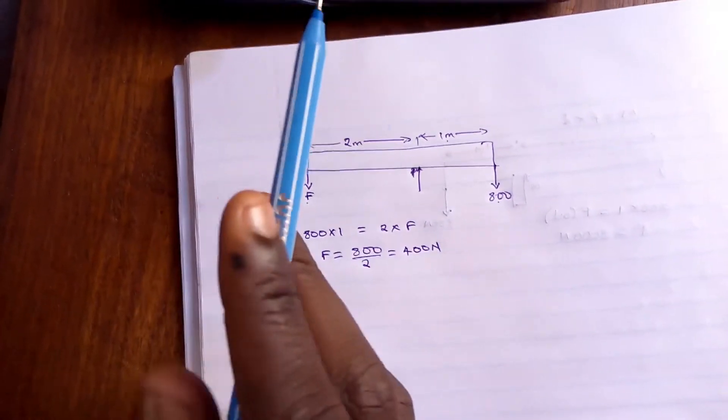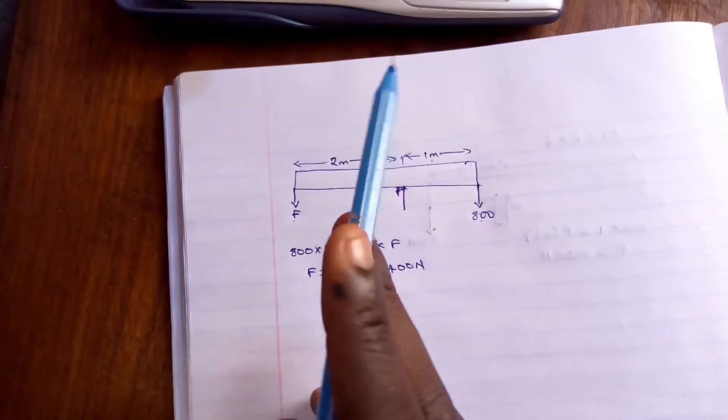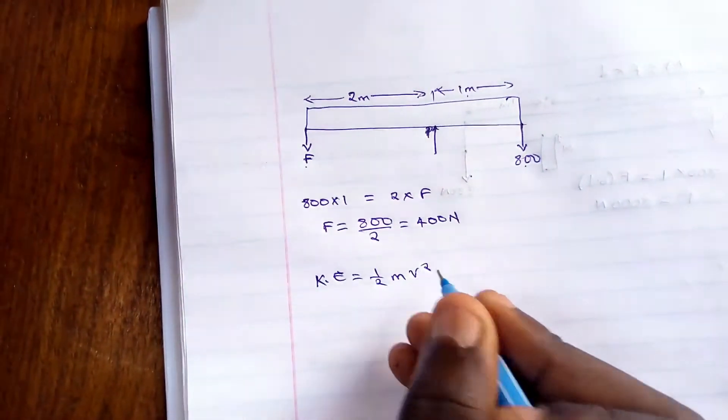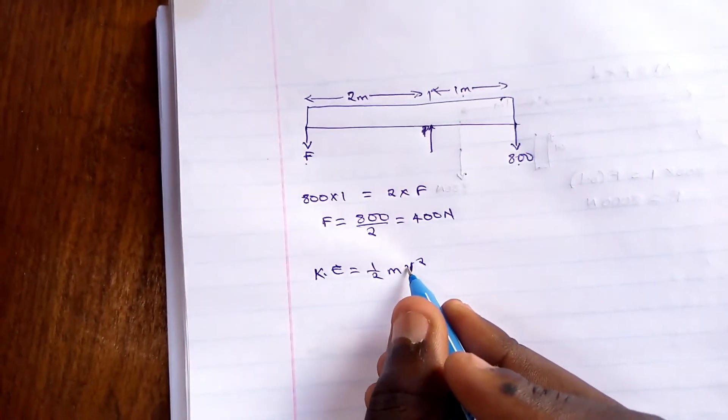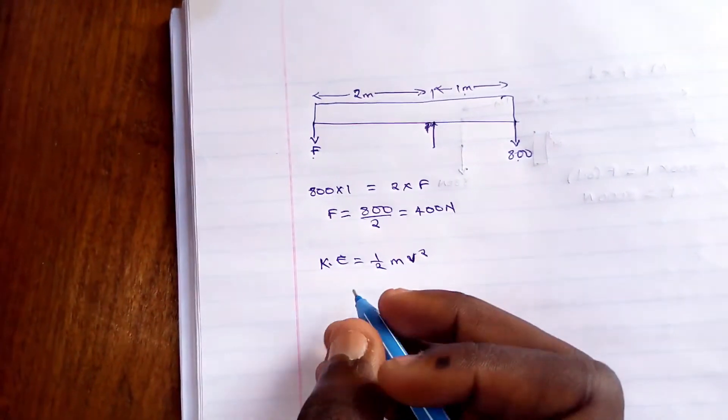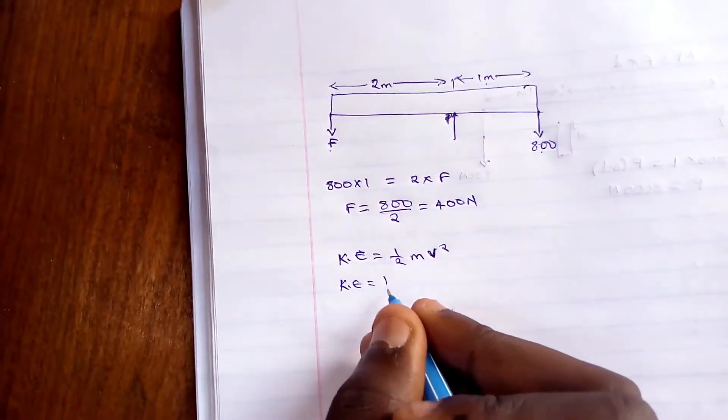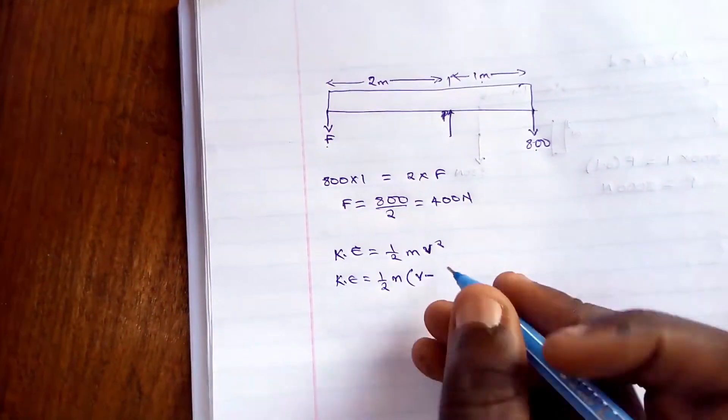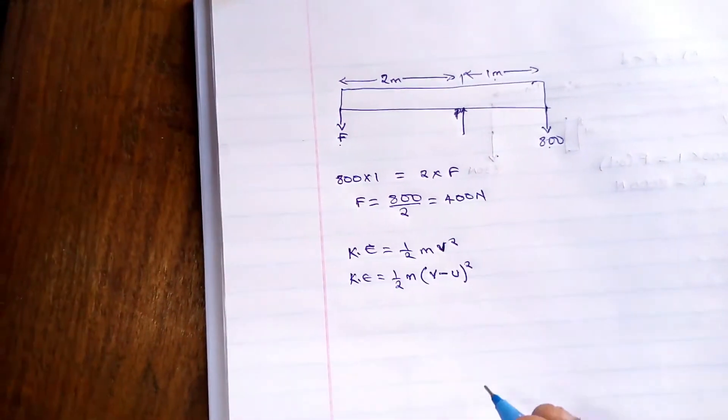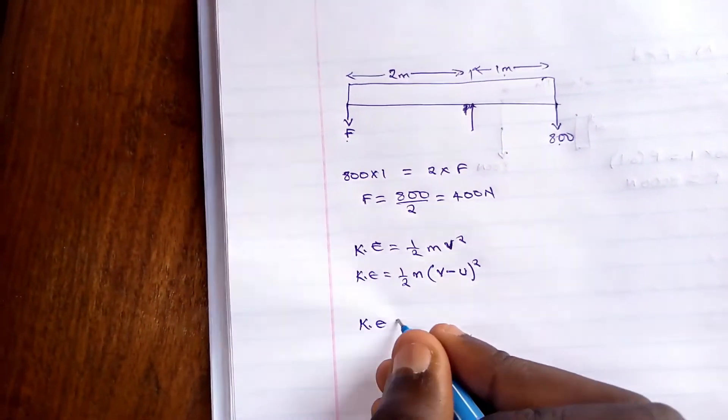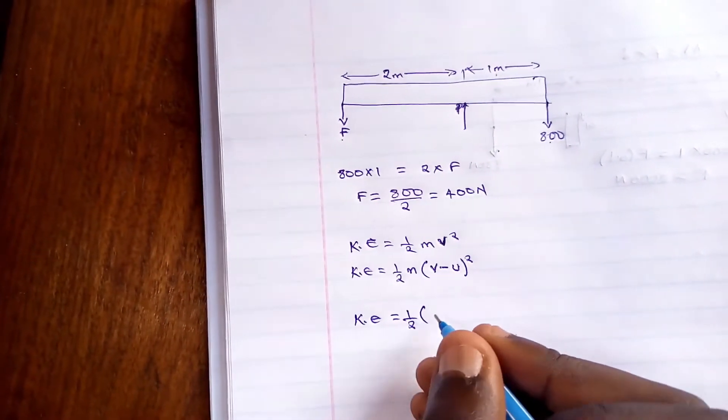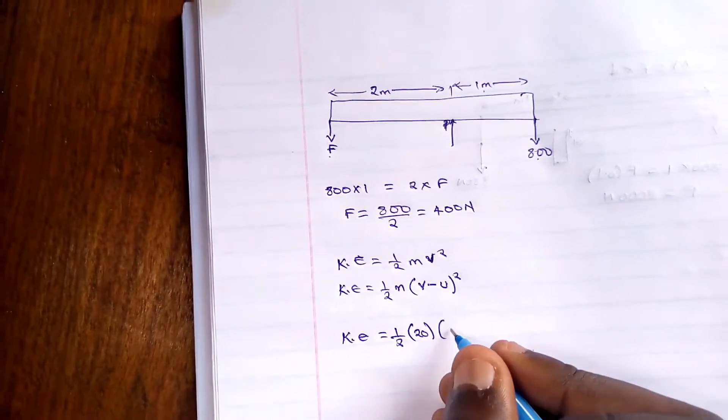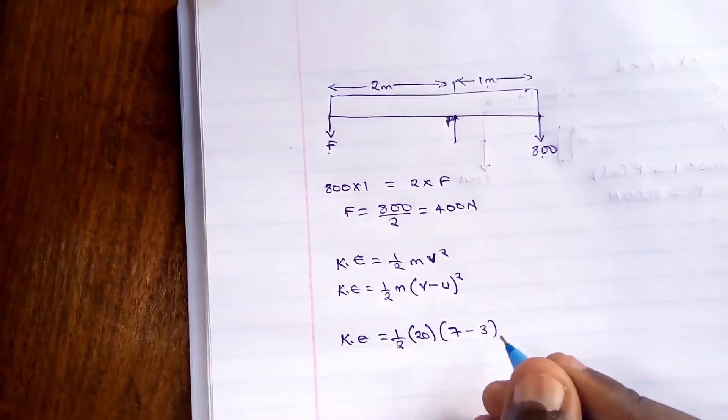The kinetic energy that is required in achieving the new speed will be KE, which is equal to half m v squared. But this v is not constant - it changed from three to seven meters per second. So the kinetic energy will be equal to half the mass times final velocity minus initial velocity squared. So KE should be equal to half, the mass is 20 kg, and then the final velocity is seven and the initial is three.